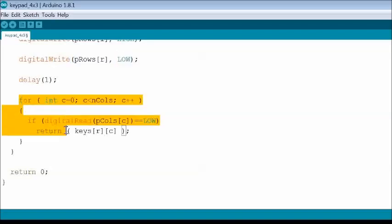Now, read the status of each column sequentially using digital read function. If any column is pulled low due to button press, then the corresponding text from the previously declared array matching the row and column is returned. If no button is pressed, then null value is returned.